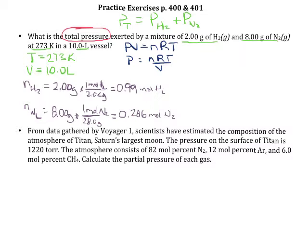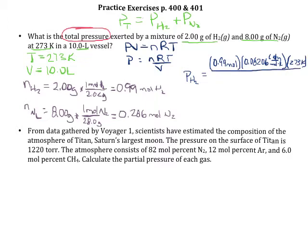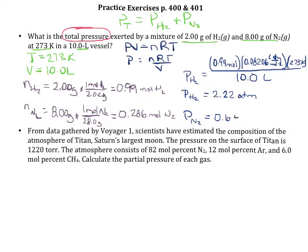Now we use both of these to solve for pressure and then add the results. The pressure of H₂ equals moles of H₂ times R times temperature, divided by volume, giving us 2.22 atmospheres. For the partial pressure of N₂, we do the same thing — R, temperature, and volume are unchanged, so only n changes. Plugging in 0.286 instead of 0.99 gives an answer of 0.641 atmospheres.